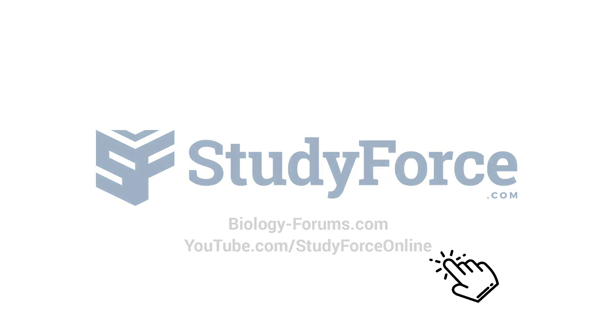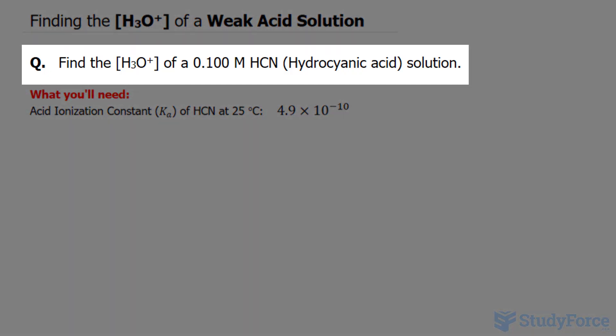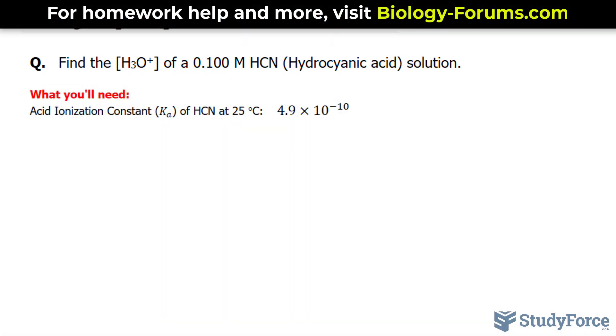In this tutorial, I'll show you how to find the concentration of hydronium of a weak acid solution. The question reads, find the concentration of H3O+ of a 0.100 molar HCN, which is hydrocyanic acid, solution.